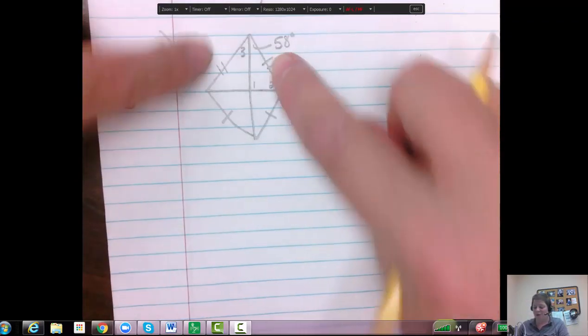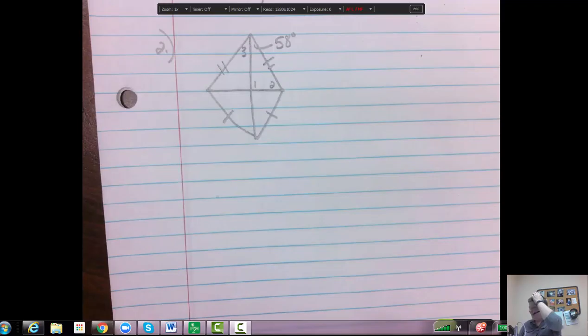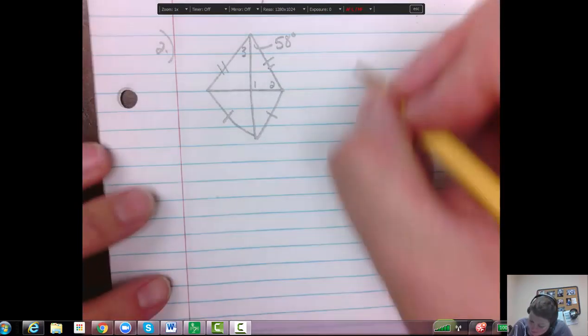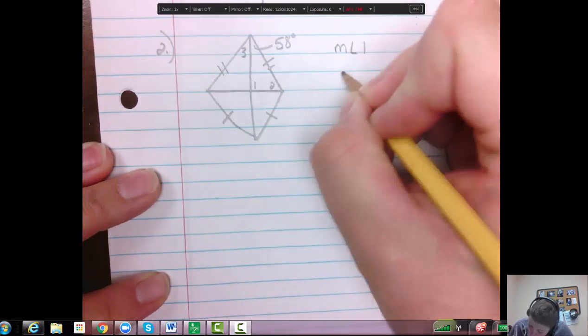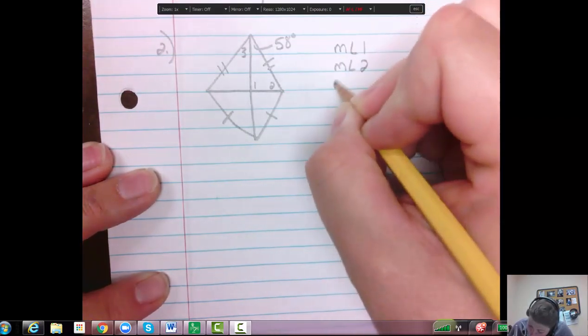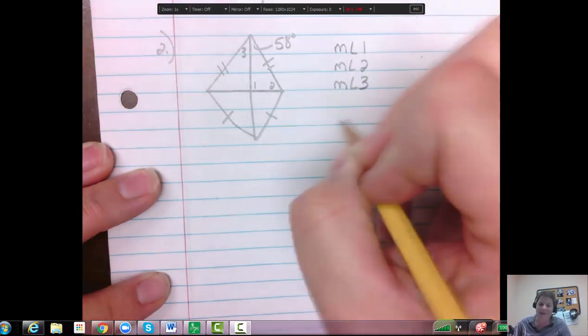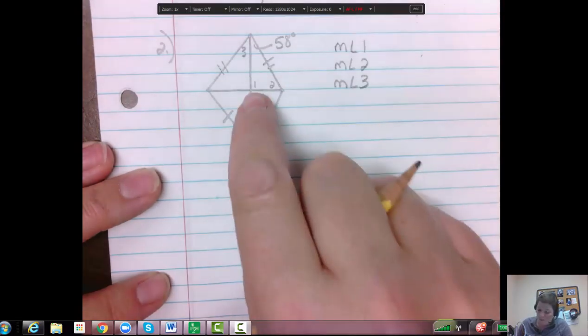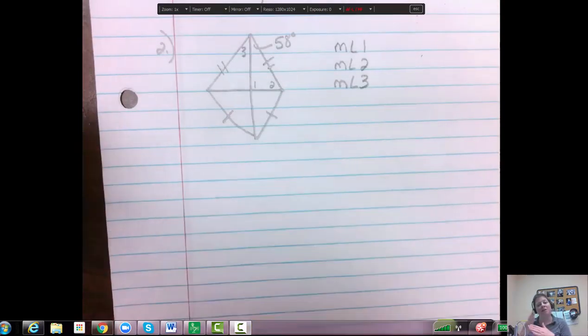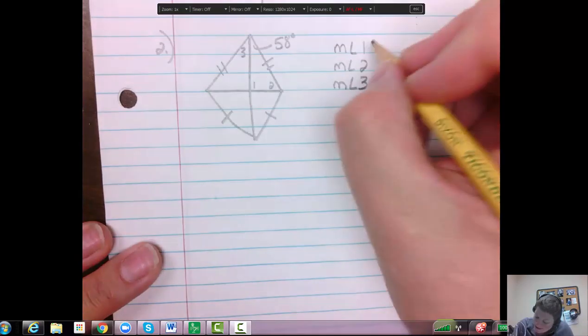So on this kite, and we know it's a kite because these two are congruent, these two are congruent, what is one, two, and three? So we need to find the measure of angle one, the measure of angle two, and the measure of angle three. One of them's super easy. The measure of angle one has to be 90 because those meet at a 90 degree angle, the diagonals.